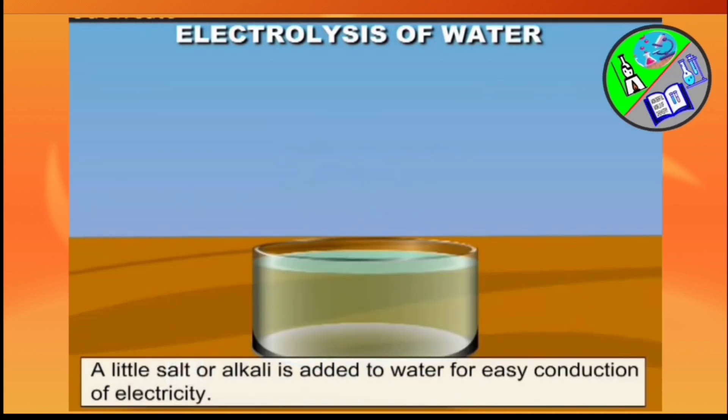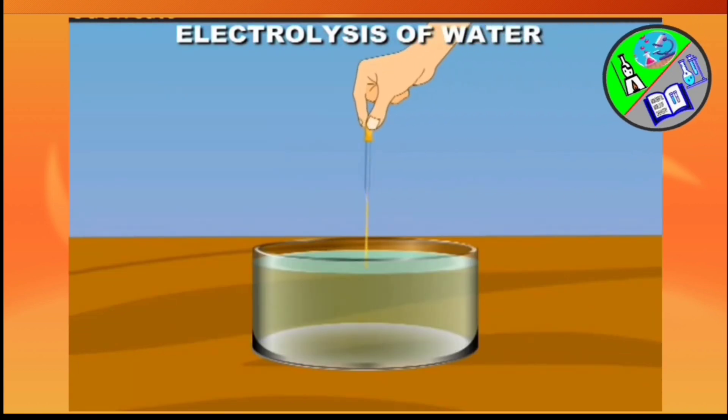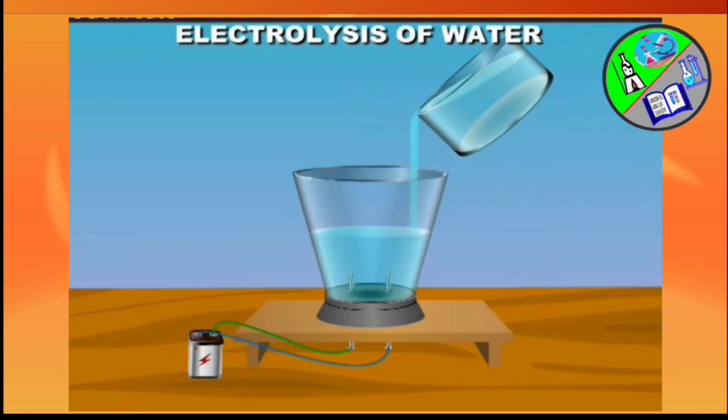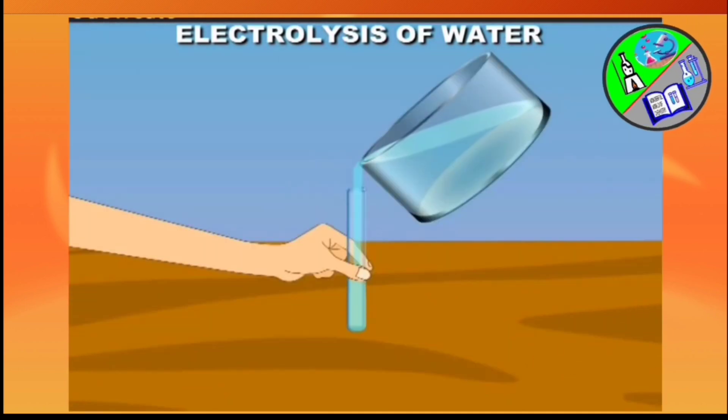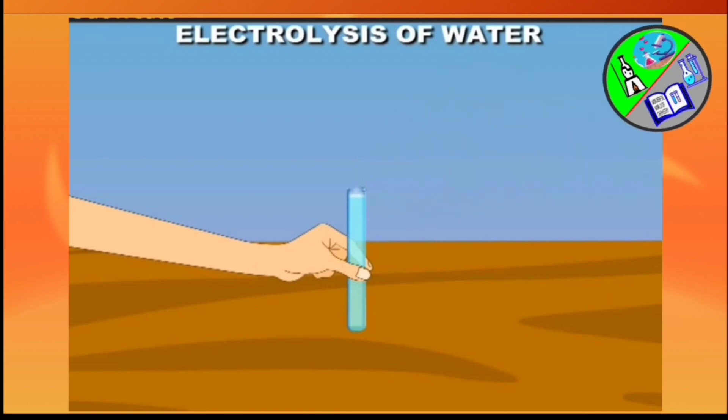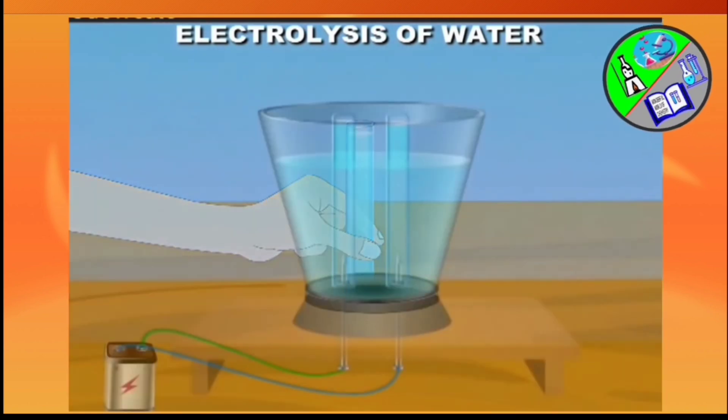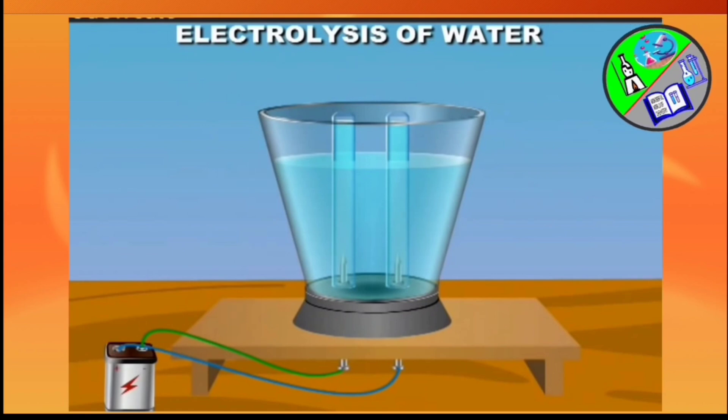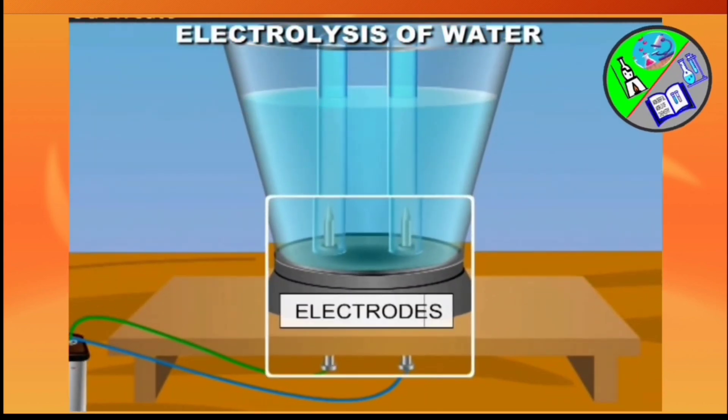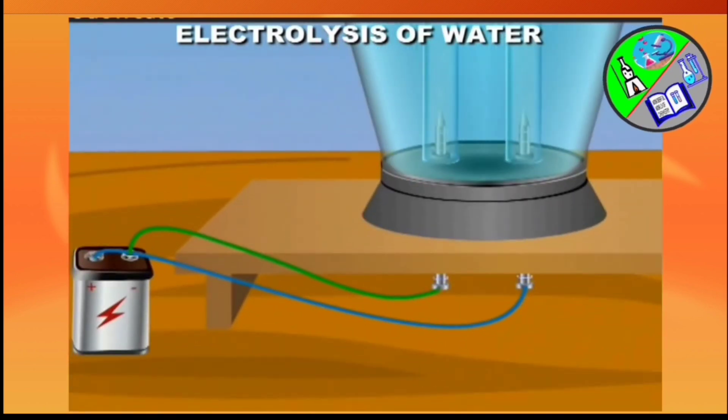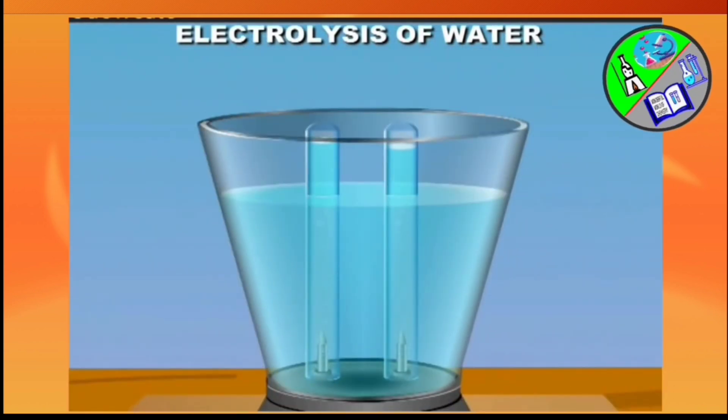Then a little quantity of acid is dissolved in water, and the solution is poured in the apparatus as shown. Two test tubes are filled with the solution with no air bubbles in it. Then the test tubes are inverted over the iron nails. These iron nails are electrodes and are connected to the positive and negative terminal of the battery. We can see gases are produced in the test tubes. After 30 minutes we'll see the volume of gases formed in each test tube.